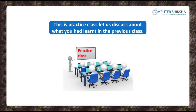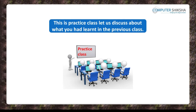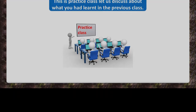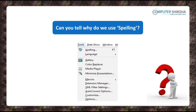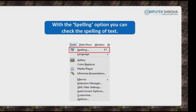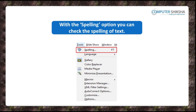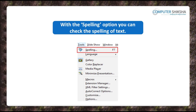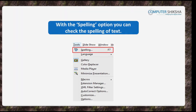Let us discuss about what we learned in the previous class. Can you say why do we use the spelling option? With the spelling option, you can check the spelling of your text. And if you have made a mistake in typing out the spellings, then you can correct the same using the spelling option.